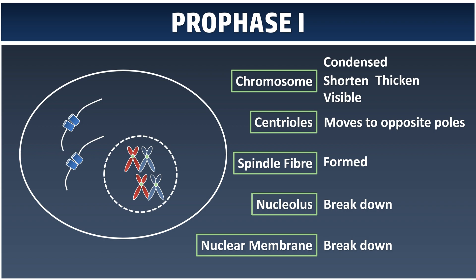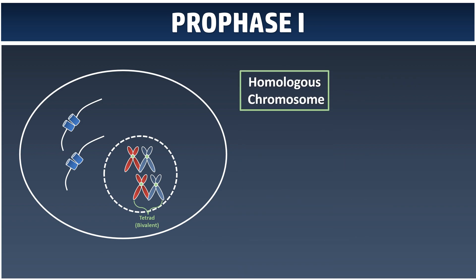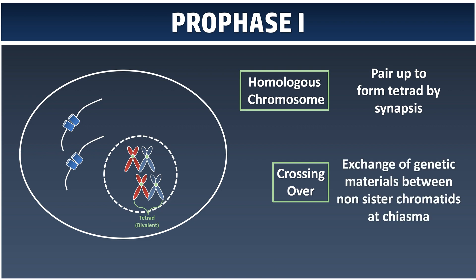What is so special about Prophase I as compared to mitosis is that the homologous chromosomes will actually pair up to become the tetrad or bivalent. This happens through a process called synapsis — synapsis is a process where the homologous chromosomes pair up to form the bivalent. Whenever they pair up, they tend to have the process of crossing over, which is the exchange of genetic information between non-sister chromatids at the specific location called chiasma.